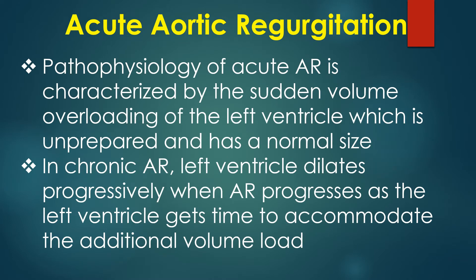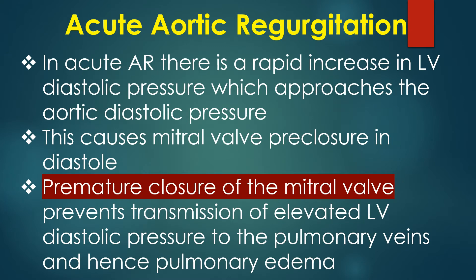The pathophysiology of acute AR is characterized by sudden volume overloading of the left ventricle, which is unprepared and has a normal size. In chronic AR, the left ventricle dilates progressively as it gets time to accommodate the additional volume load. In acute AR, there is a rapid increase in LV diastolic pressure which approaches the aortic diastolic pressure.